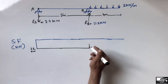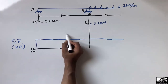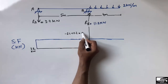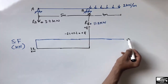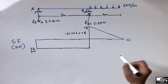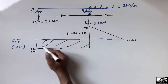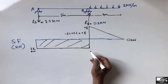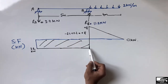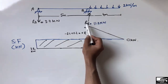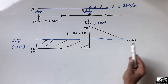At support B, −3.2 + 11.2 = +8 kilonewton, so the shear force jumps to +8 kN. Then, over the 4-meter hanging portion with the distributed load acting downward and no support reaction, the shear force decreases linearly from +8 kN back to 0 kilonewton at the free end of the beam. This completes the shear force diagram.